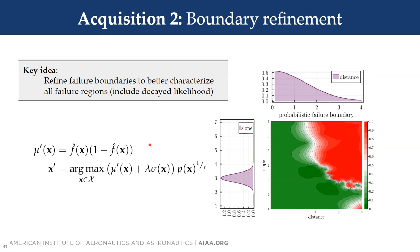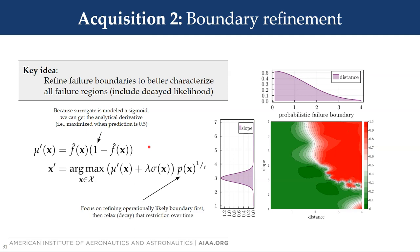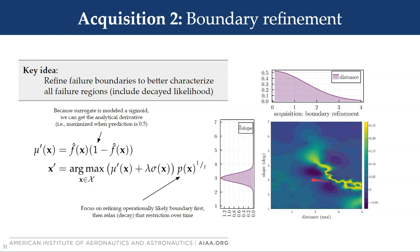The next acquisition function, called boundary refinement, refines failure boundaries to better characterize all failure regions. Because our surrogate is modeled as a sigmoid, we can get the analytical derivative where this is maximized when the prediction is 0.5, right at the boundary. We can also first focus on refining operationally likely boundaries and then relax or decay that restriction over time. As an example, the boundary extends all the way across, but the influence of the operational model shows that we first focus on the boundary early in the search, then refine the entire boundary in the limit.